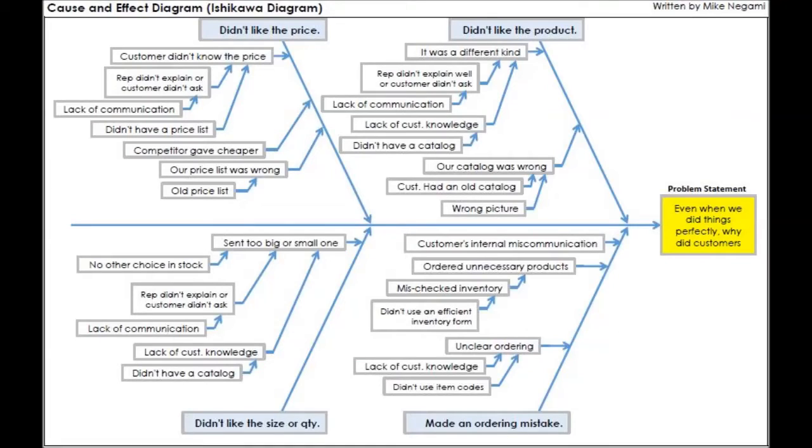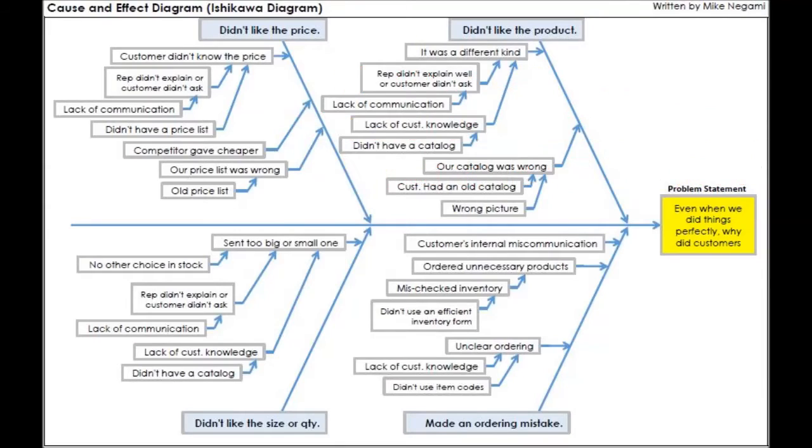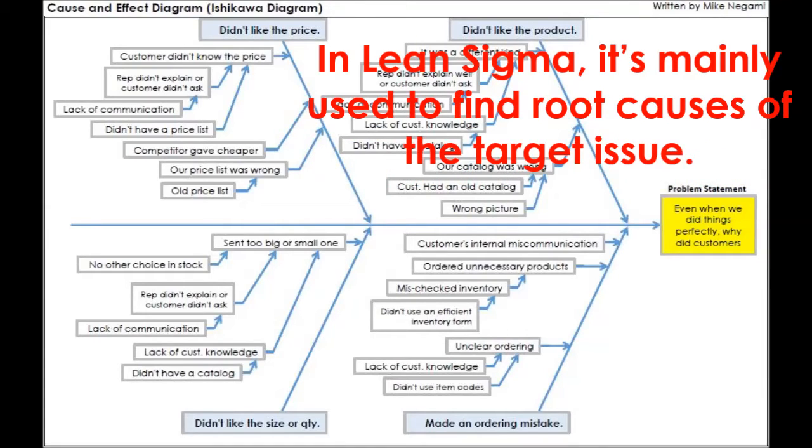This is a cause and effect diagram. From the diagram shape, it's also called a fishbone diagram. This was created by Mr. Kaoru Ishikawa, who is the father of the 7 QC tools. It's also called the Ishikawa diagram, after him. In Lean Sigma, it's mainly used to find root causes of the target issue.